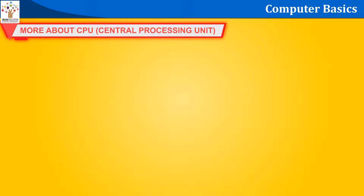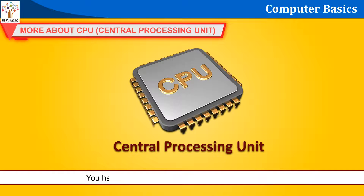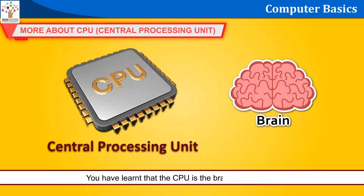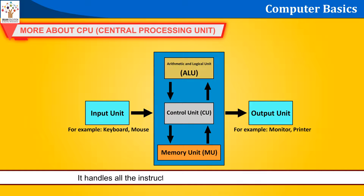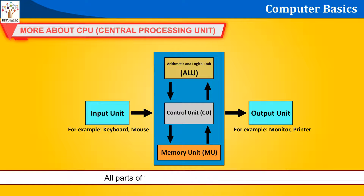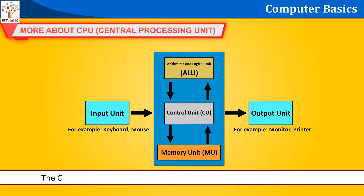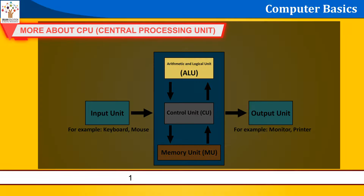More about CPU — Central Processing Unit. You have learnt that the CPU is the brain of the computer. It handles all the instructions or input you give to the computer. All parts of the computer work through the CPU. The CPU is attached inside the CPU box and is made up of three main parts.